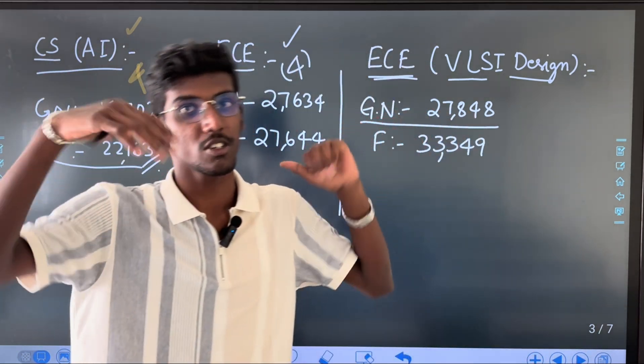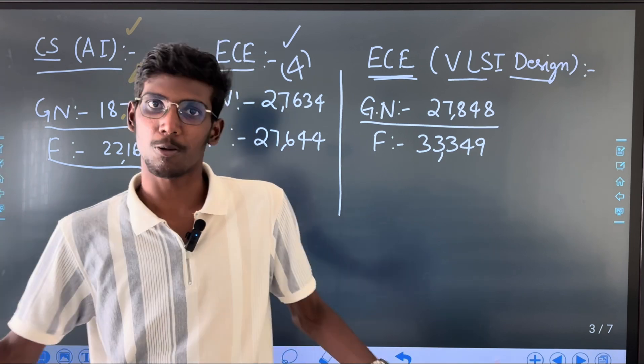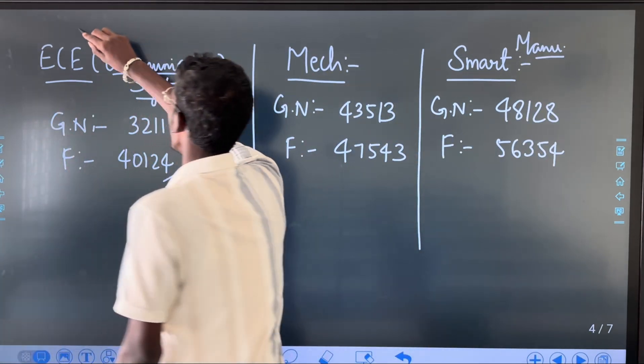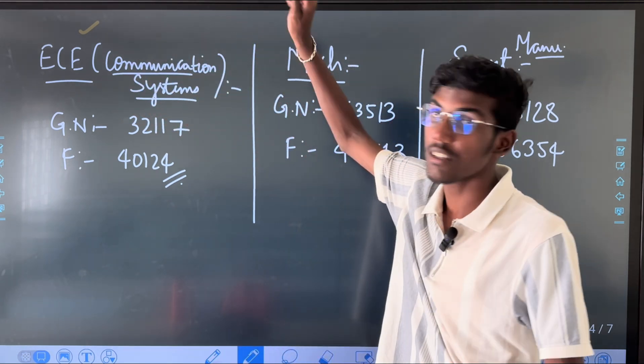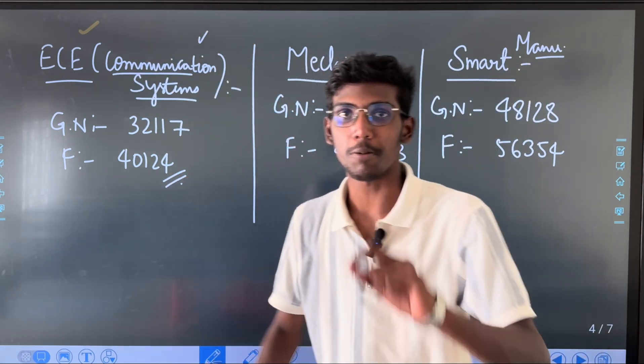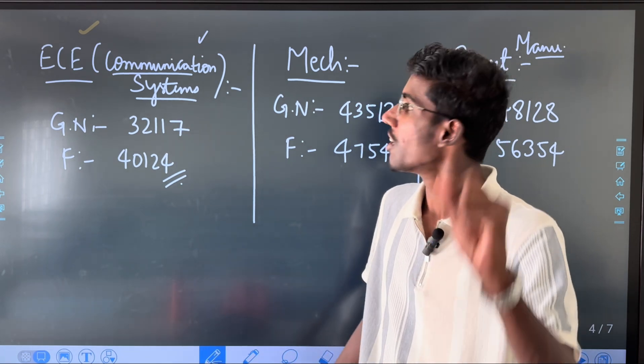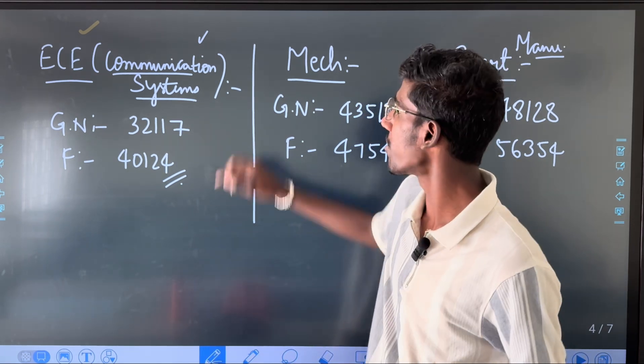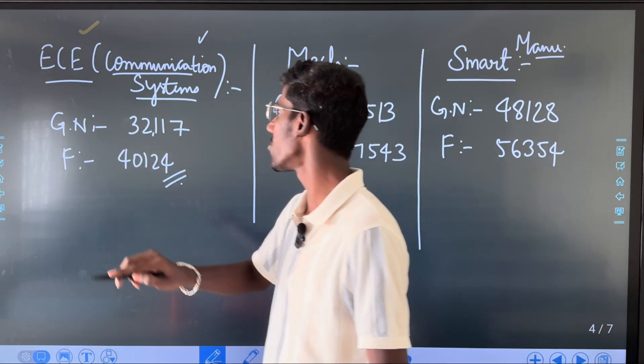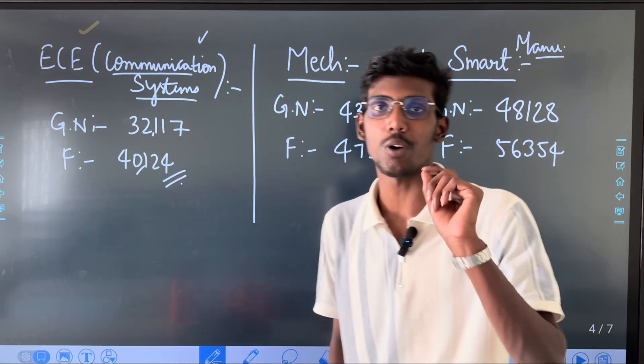Next, CS is 5 years course dual degree. CS is 4 years normal degree. Next, ECE 4 years plus 1 year - that is Integrated M.Tech dual degree Communication Systems. You do M.Tech research in Communication Systems. In 4 years B.Tech, in 5th year you do M.Tech research. The rank is 32,117. Female is 40,124.